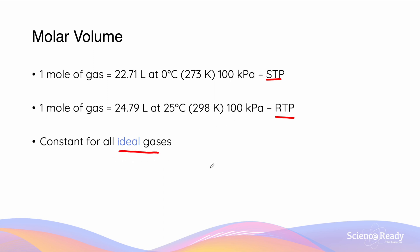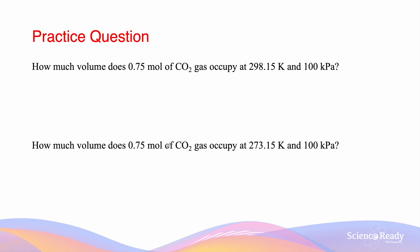STP is 0 degrees Celsius and 100 kPa, and RTP is 25 degrees Celsius and 100 kPa. At STP, one mole of gas will occupy 22.71 liters regardless of what gas it is, and at RTP it will occupy a volume of 24.79 liters. These are the two practice questions which require us to utilize the molar volume to calculate the volume of a certain amount of gas.